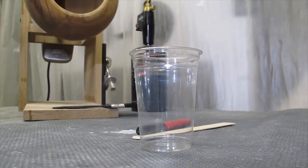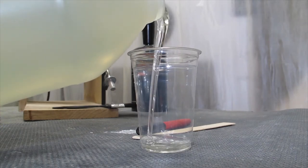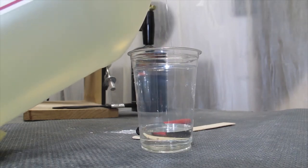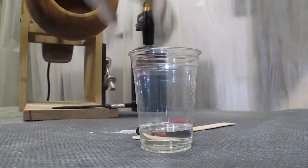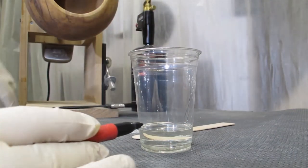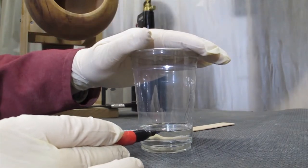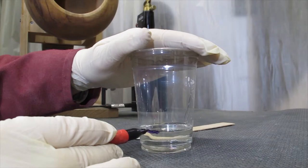I always start off by putting the hardener into the cup first. Next, I will put a mark on the cup at the level of the hardener.